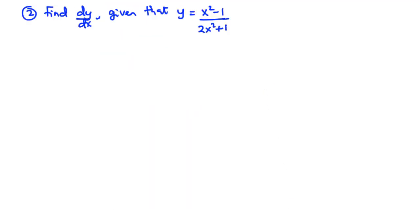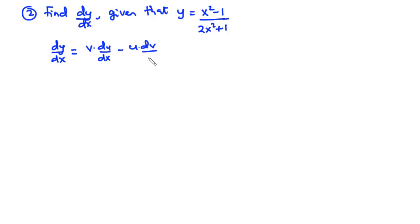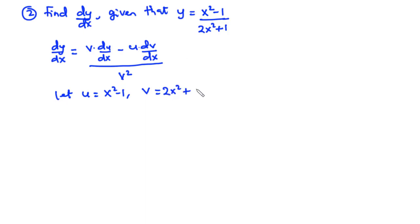For the second question, we have to find dy/dx given that y is equal to (x squared minus 1) over (2x squared plus 1). To find the derivative using the quotient rule: dy/dx equals v times du/dx minus u times dv/dx, divided by v squared. Let u equal x squared minus 1 and let v equal 2x squared plus 1.